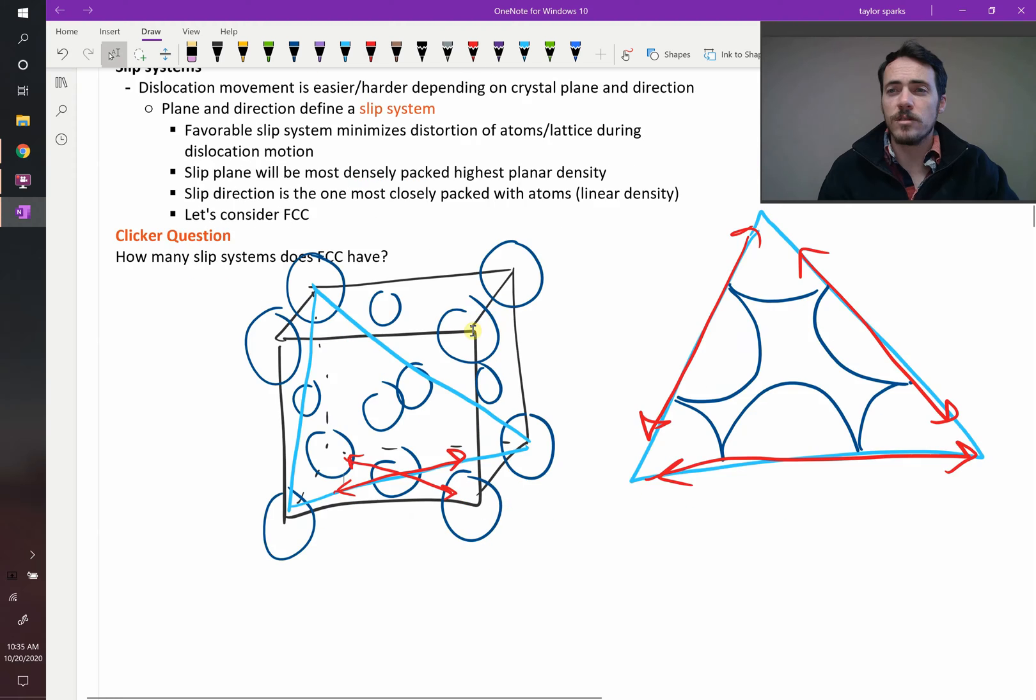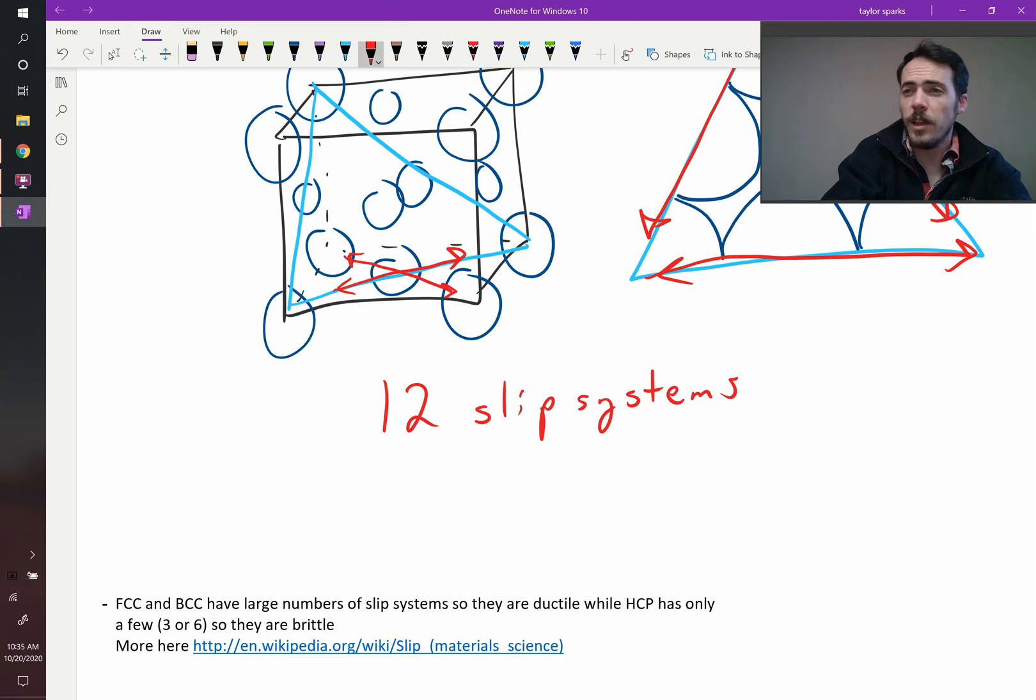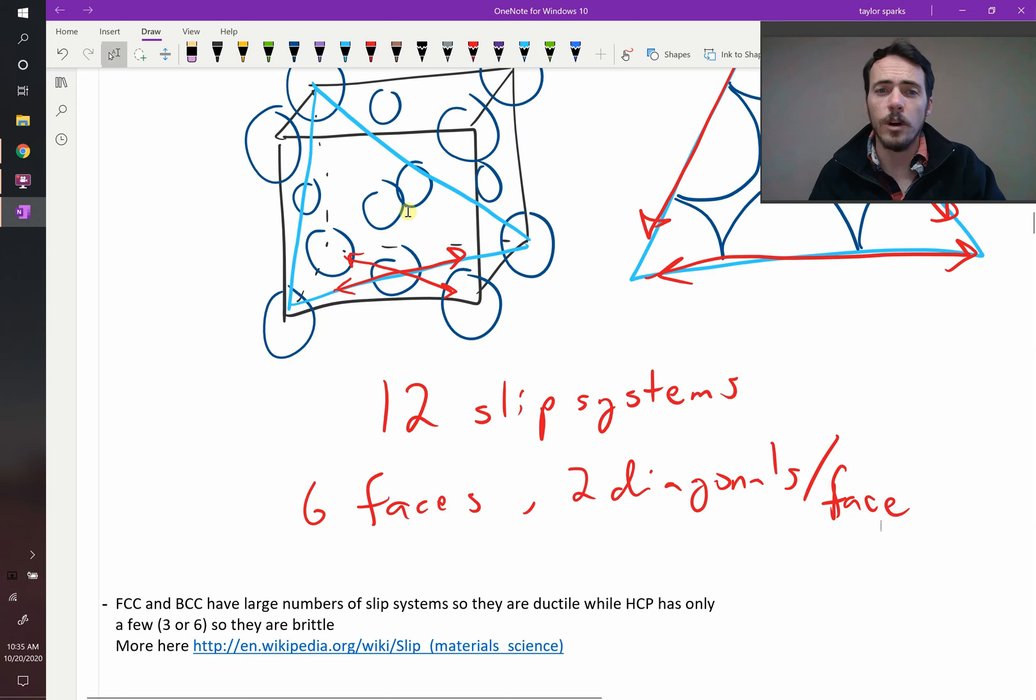And again, that's because you've got six faces and two directions per face. So you end up with 12.